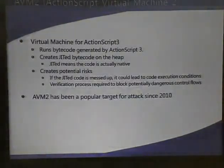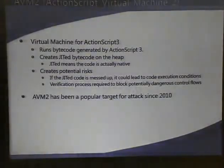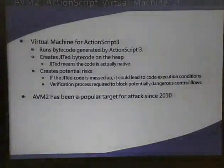The previous virtual machine used an interpreter model, so every time the bytecode ran it would interpret every instruction every time — it was kind of slow. They improved that using JIT, just-in-time compilation. When the virtual machine reads the bytecode, it dynamically generates native code on the heap. This sometimes creates potential security risks. There were some vulnerabilities with JVM before — JVM is much more popular than AVM. These AVM vulnerabilities are kind of very, very interesting. Since 2010 we observed a lot of AVM2 attacks appearing from the internet.